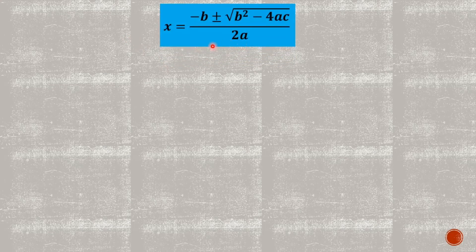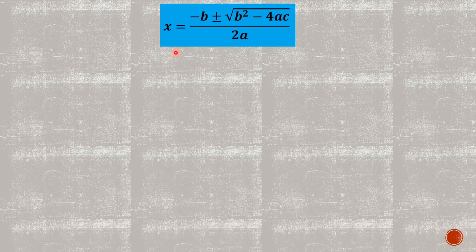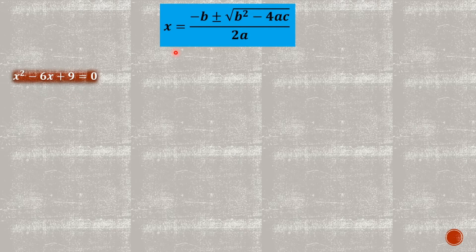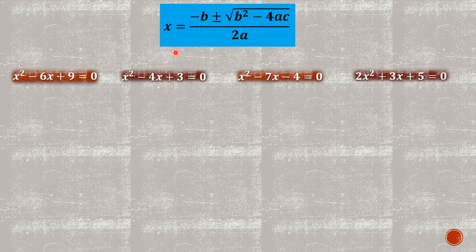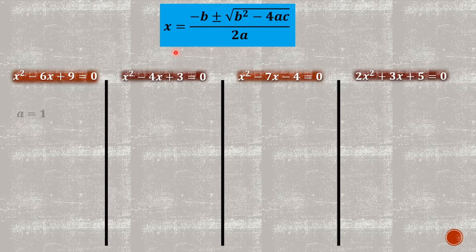In this part of the video, we want to show the solution or the roots for the quadratic equations we solved to demonstrate the nature of the roots using the discriminant. We have four examples and we want to show what the roots are and also to confirm that the discriminant and nature of the roots were correct.